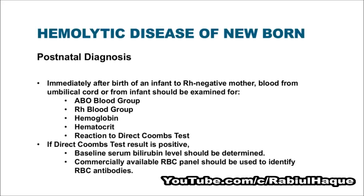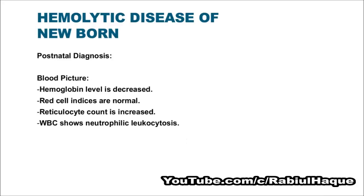Now we will talk about postnatal diagnosis, or diagnosis after birth. Immediately after birth of an infant to an Rh negative mother, blood from the umbilical cord or from the infant should be examined for ABO blood group, Rh blood group, hemoglobin level, hematocrit, and reaction to the direct Coombs test. If the direct Coombs test result is positive, baseline serum bilirubin level should be determined, and a commercially available red blood cell panel should be used to identify red blood cell antibodies.